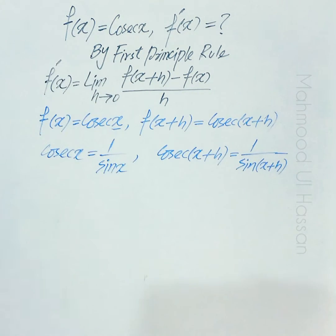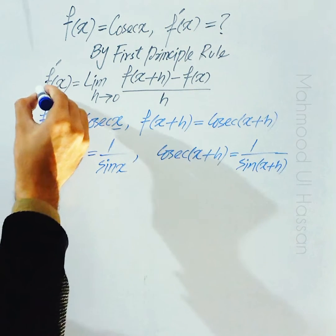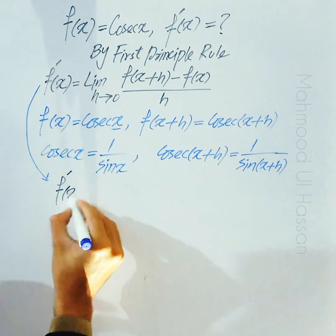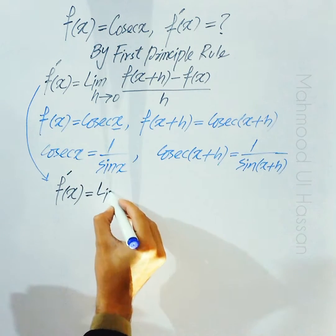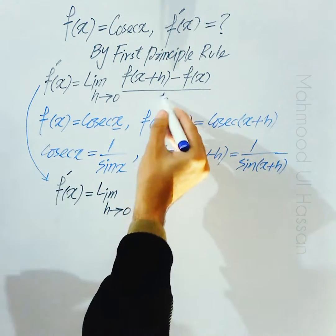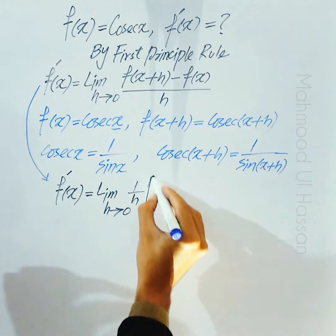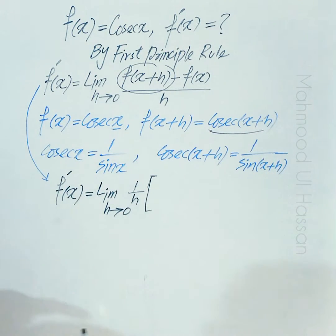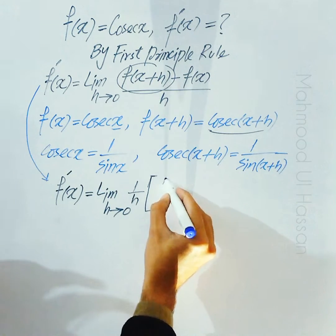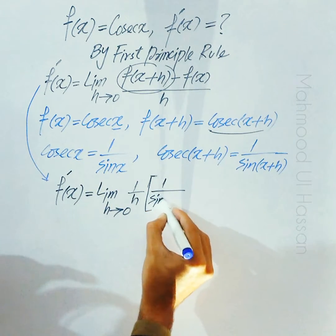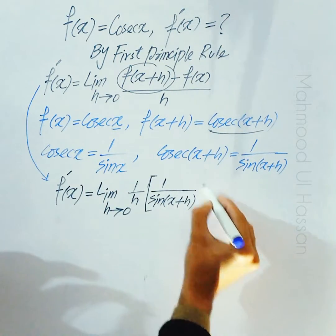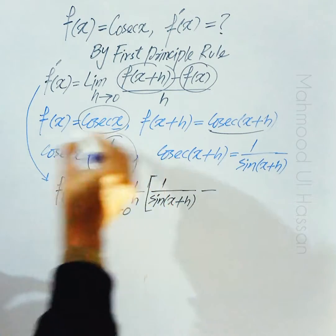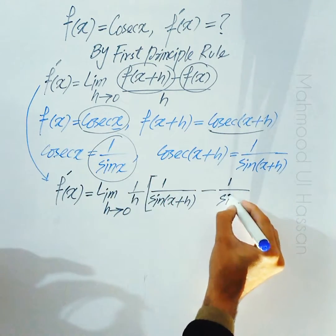Substitute all these values into the definition of derivative: f'(x) = limit h→0, (1/h) × [f(x+h) − f(x)]. f(x+h) کی جگہ cosecant(x+h) = 1/sine(x+h) اور f(x) کی جگہ cosecant(x) = 1/sine(x) آئے گا۔